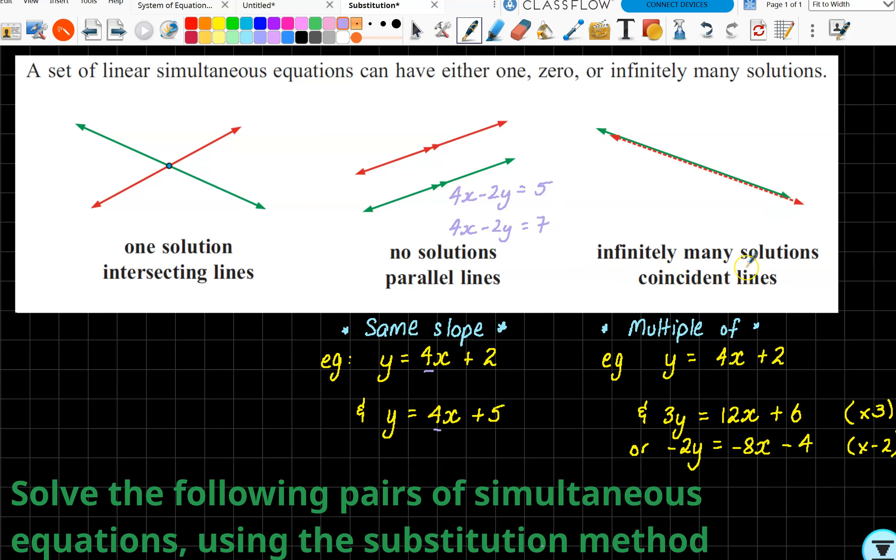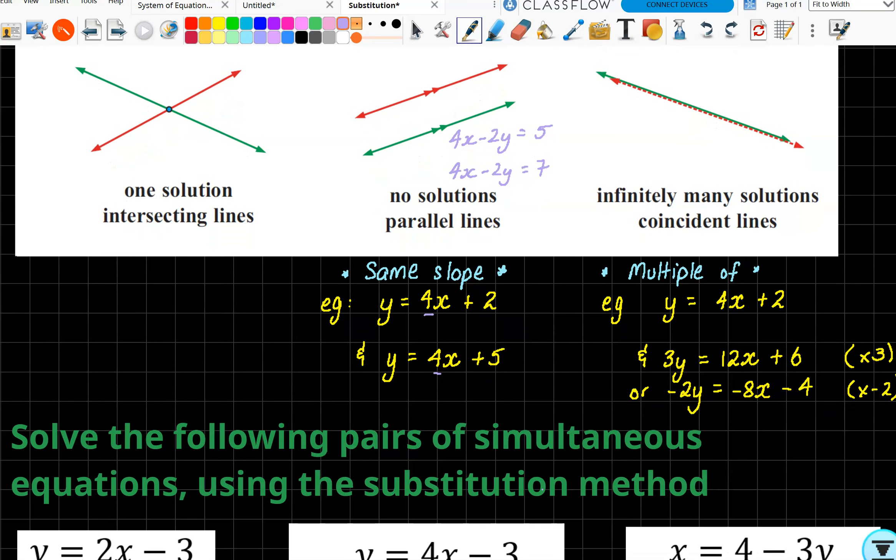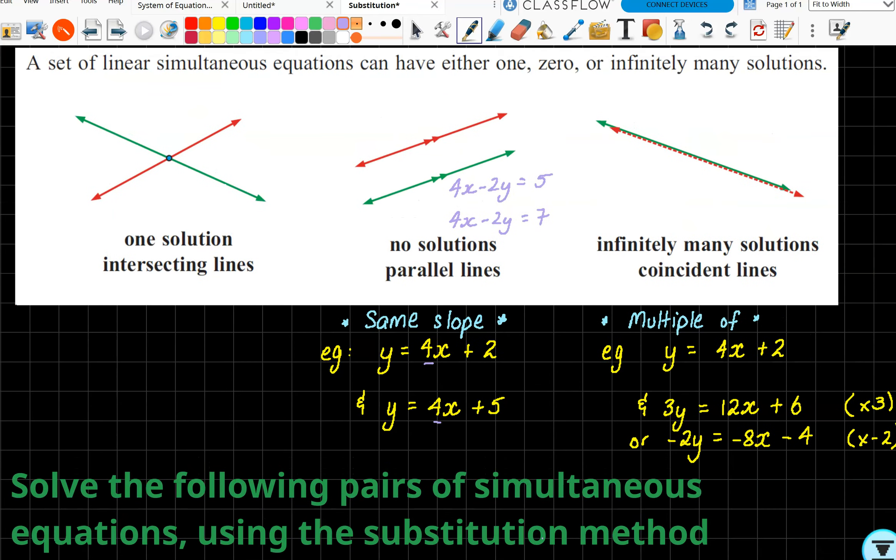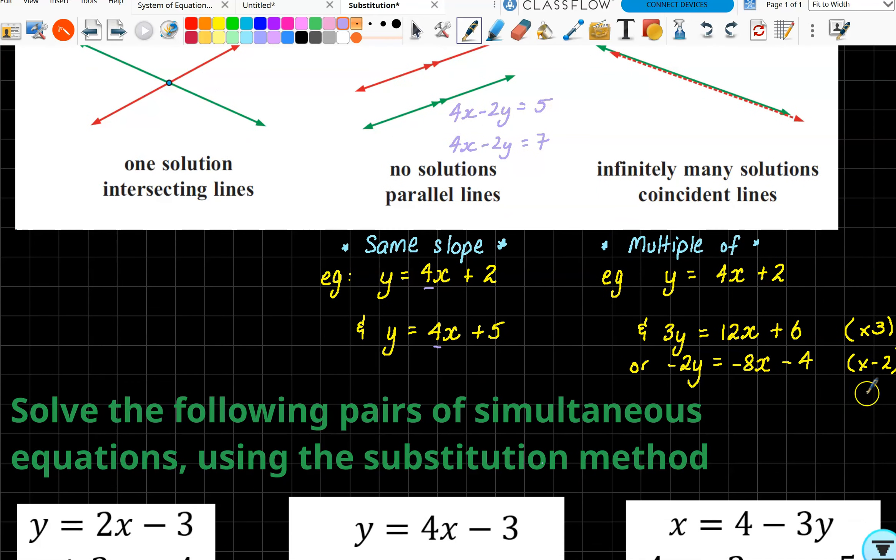The other type that we could have is infinitely many solutions, and that's basically where one line lies on top of the other. That means they will be a multiple of each other. So if I've got the original y = 4x + 2, then you can see if I times the whole thing by 3, so 3y, 4 times 3 is 12, and so on, we would find that these would have infinitely many solutions because it's basically the same line, just a multiple of each other.